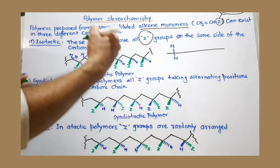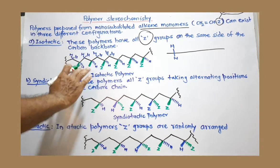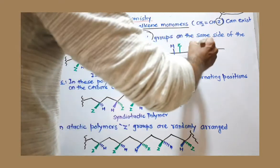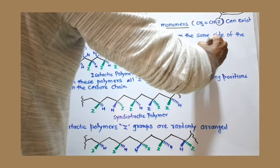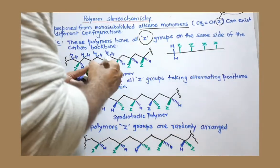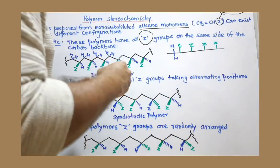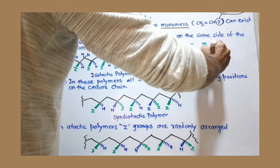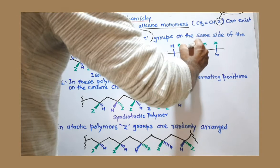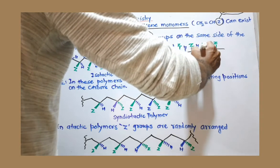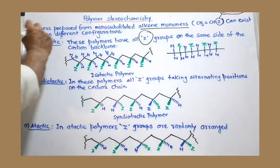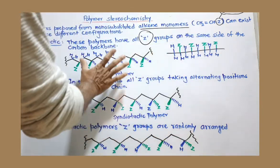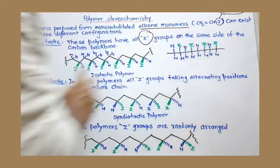In the isotactic arrangement, Z is consistently present above the plane at each substituted carbon, while H on those same carbons is below the plane. At alternate positions there are two hydrogens. This regular arrangement — all Z groups on the same side — is what you observe in the isotactic stereoisomer of the polymer.